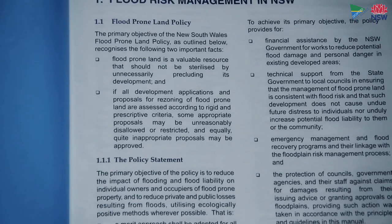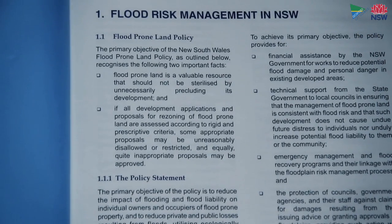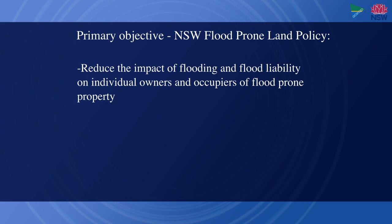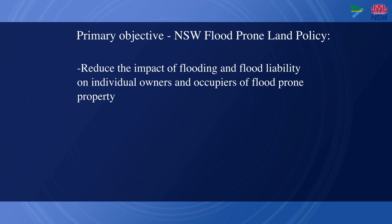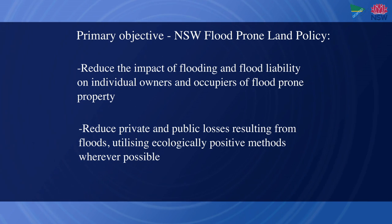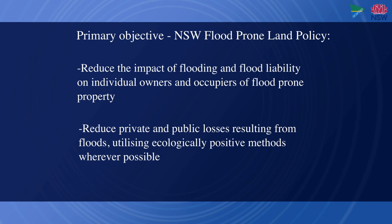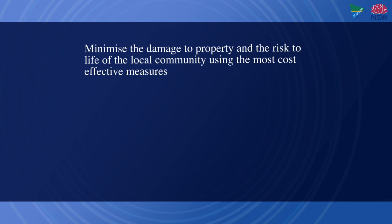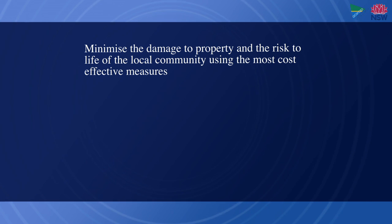The primary objective of the NSW Floodprone Land Policy is to reduce the impact of flooding and flood liability on individual owners and occupiers of flood-prone property, and to reduce private and public losses resulting from floods, utilising ecologically positive methods wherever possible. In layman's terms, that means to minimise the damage to property and the risk to life of the local community using the most cost-effective measures.